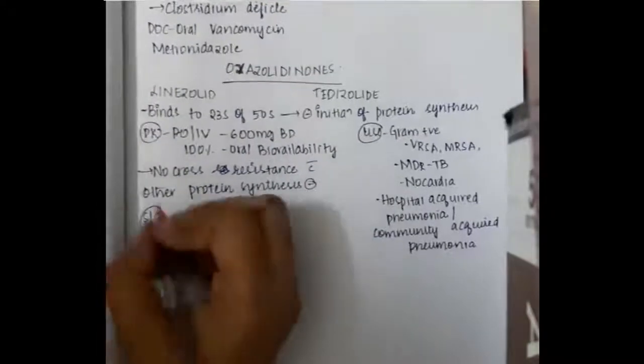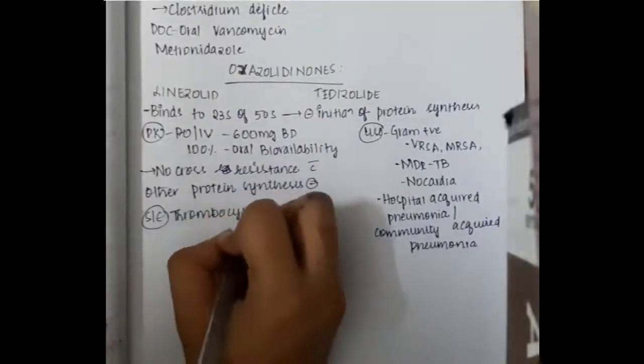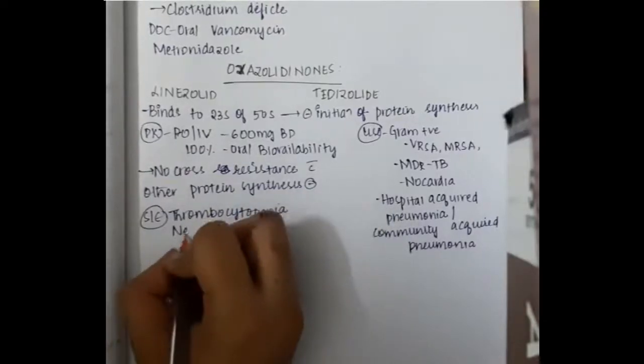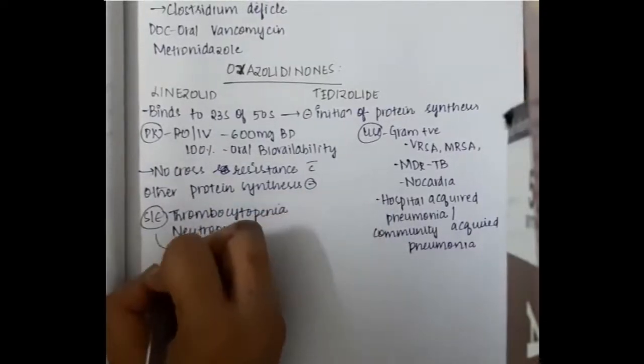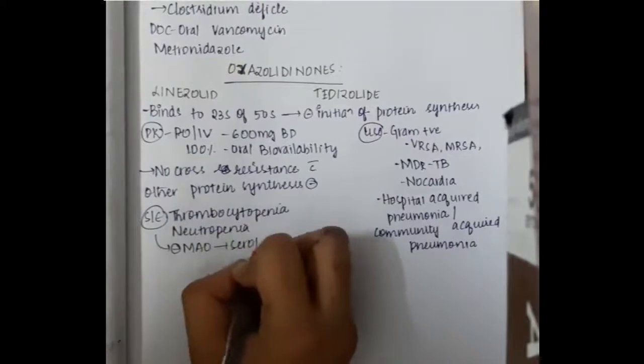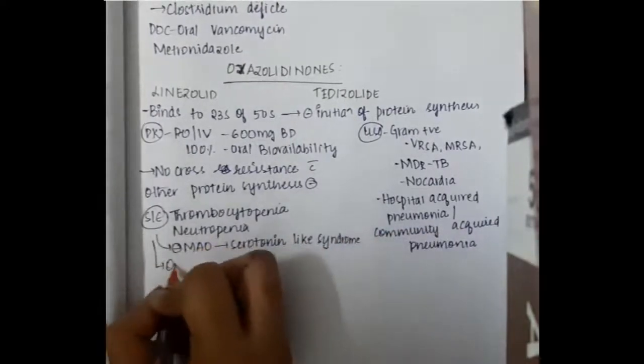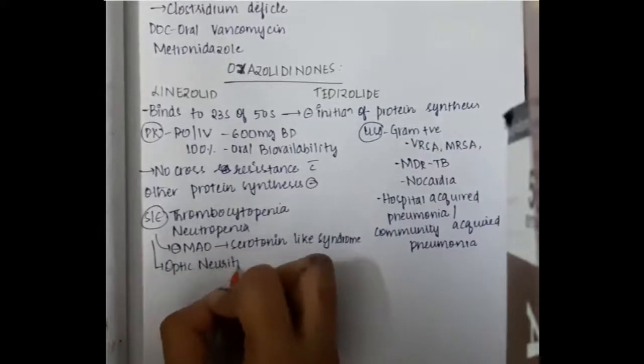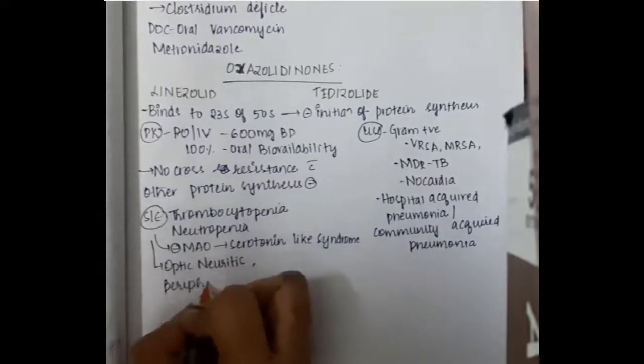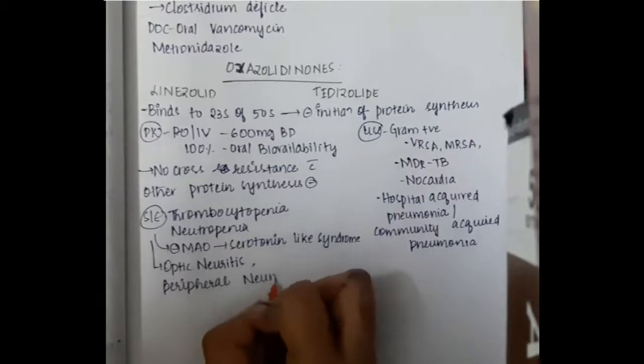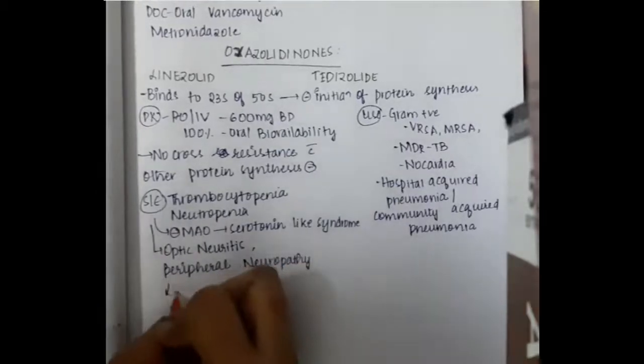The side effects of oxazolidinediones include thrombocytopenia, neutropenia, serotonin-like syndrome from monoamine oxidase inhibition, optic neuritis, peripheral neuropathy, and lactic acidosis.